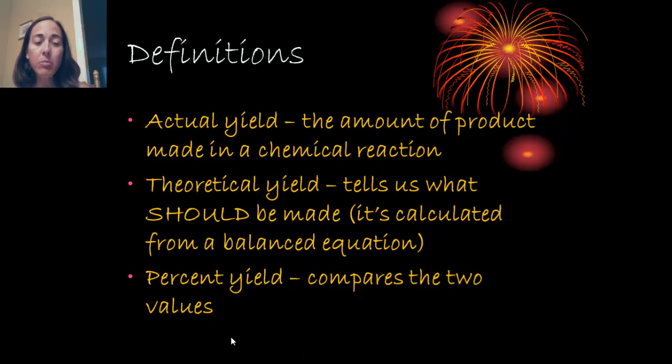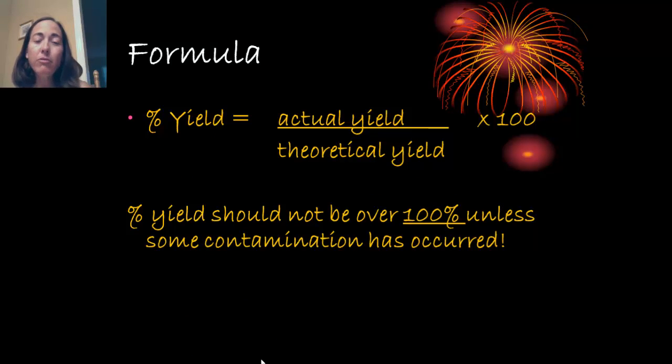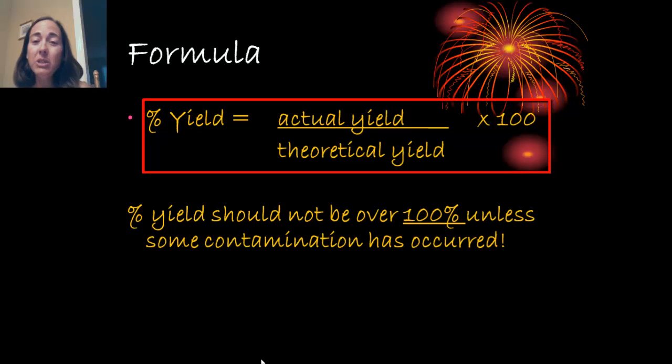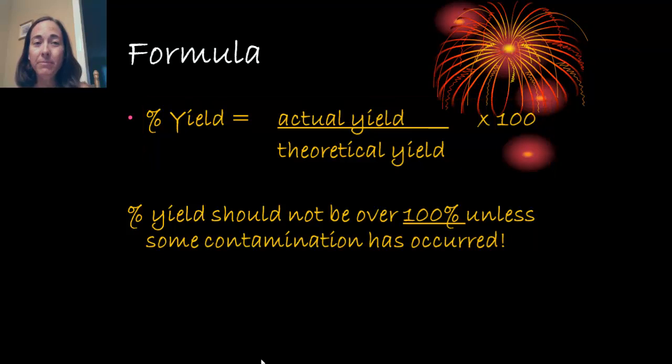When you study percent yield, the formula, the way they're compared, is to divide the actual yield from the lab by the theoretical calculated yield, and you multiply that by 100 to give yourself a percent. Ideally, percent yield should not go over 100%. If it does go over 100%, some sort of contamination or error has occurred in your lab experiment.